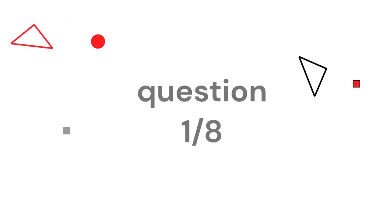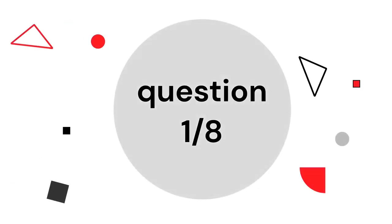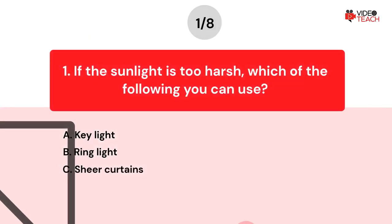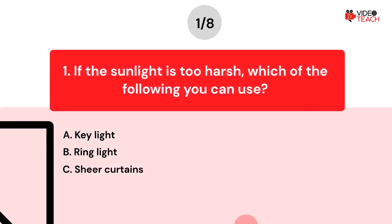Question number one. If the sunlight is too harsh, which of the following can you use? Option A: Key light. Option B: Ring light. Option C: Sheer curtains.